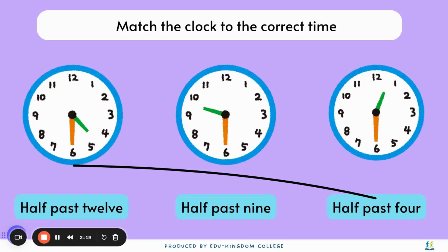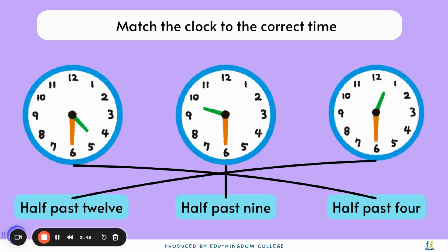The second clock: the minute hand is pointing at 6 as well, so it will be half past. Then the hour hand is pointing from 9 to 10, so the time will be half past 9. The last clock on the right: the minute hand is pointing to 6, and the hour hand is between 12 and 1. Since it's moving away from 12, it will be half past 12.